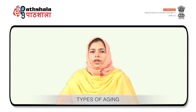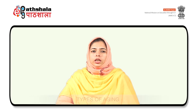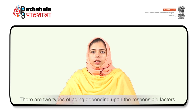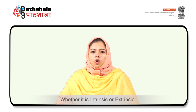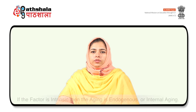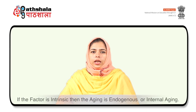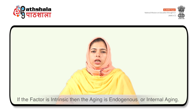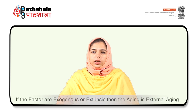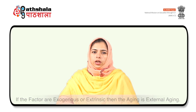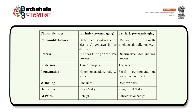The next heading is the endogenous types of aging. There are two types of aging depending upon the responsible factors, whether intrinsic or extrinsic. If the factor is intrinsic, then the aging is known as endogenous or internal aging. If the factors are exogenous or extrinsic, then the aging is called external aging. The clinical features and changes occurring in the skin layers can be seen on the screen.